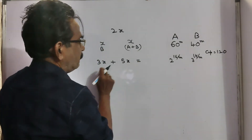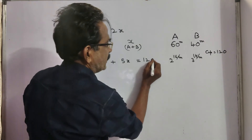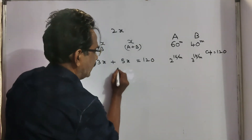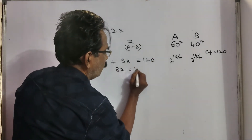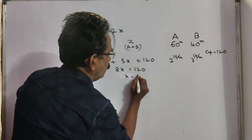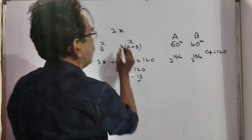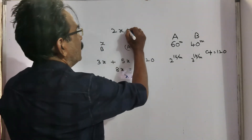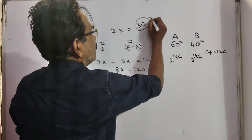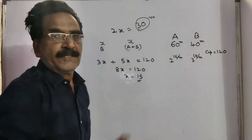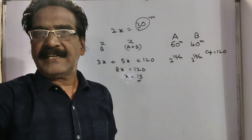So 3X plus 5X must equal the total capacity of the tank. That gives 8X equals 120, so X equals 15. The total time is equal to 2 times 15, which is 30 minutes. Okay friends, thank you.